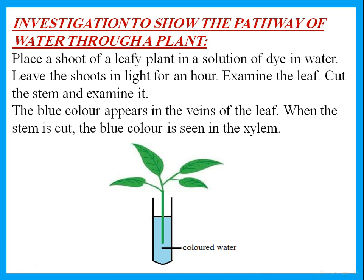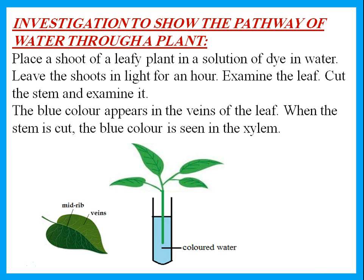We should be able to explain investigations regarding photosynthesis. For example, an investigation to show the pathway of water through a plant. We can place a shoot of a leafy plant in a solution of dyed water. Allow the plant to absorb this colored water — leave the shoots in light for an hour, examine the leaf, cut the stem and examine it. When we examine the leaf, we will find that there is blue color in the veins and the midrib of the leaf.